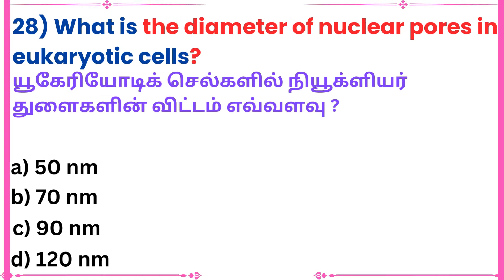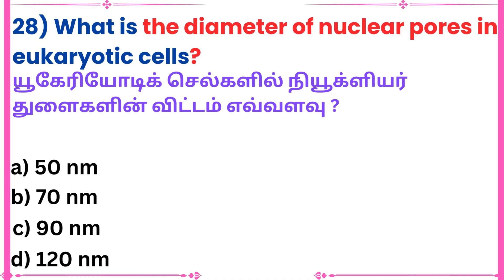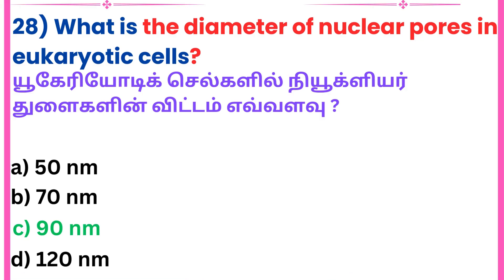Twenty-eighth question: What is the diameter of nuclear pores in eukaryotic cells? Answer: 90 nanometers.